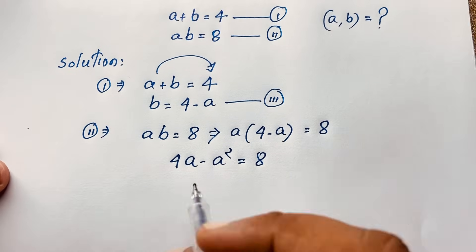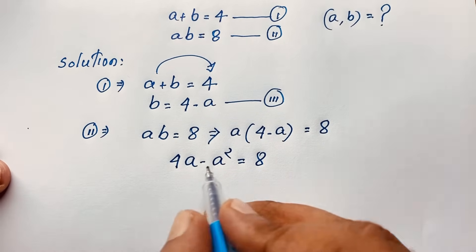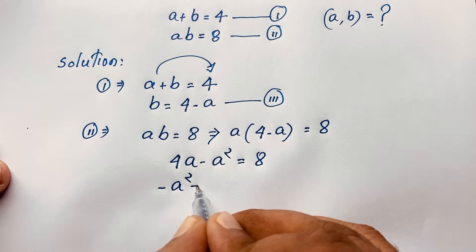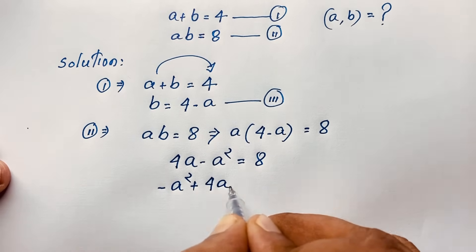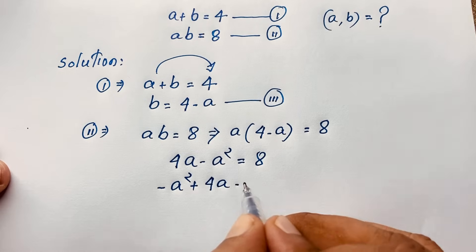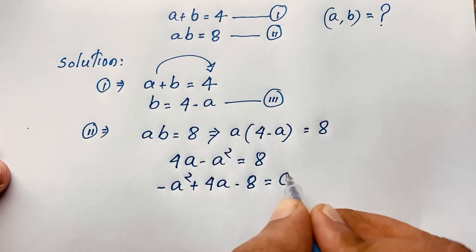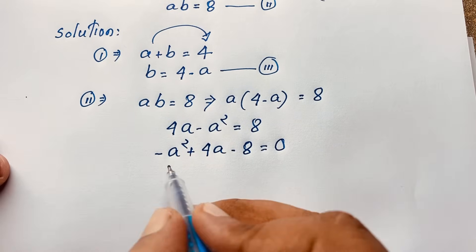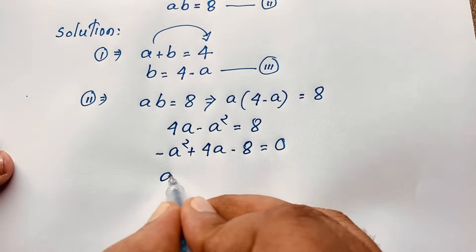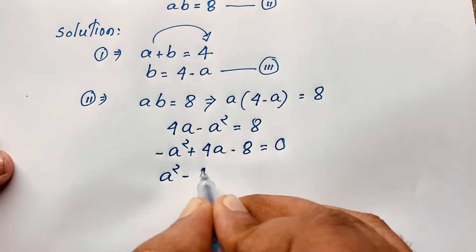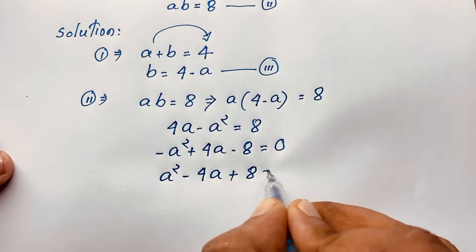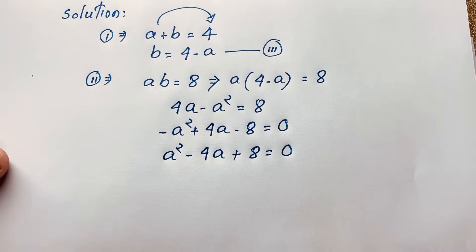We will find out a nice quadratic equation which is minus a squared plus 4a. Then if I move the positive 8 to this side, it will be negative 8 is equal to 0. Now at this point, if I multiply both sides by negative 1, it will be positive a squared minus 4a plus 8 is equal to 0.